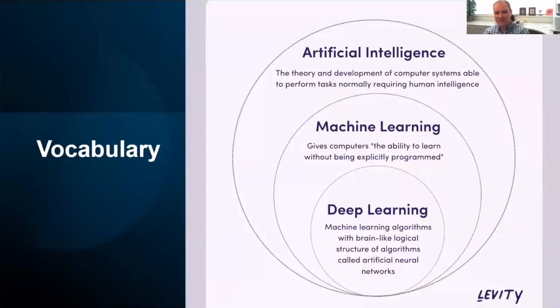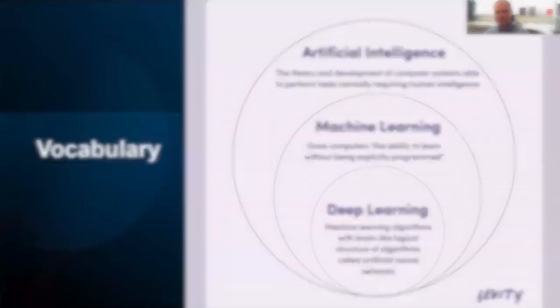To give you an idea of how much computing power these things need: ChatGPT supposedly costs a hundred million dollars to train and about seven hundred thousand dollars a day just in computing resources to run.